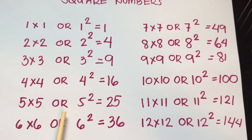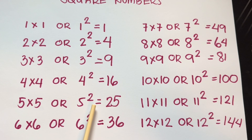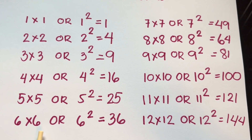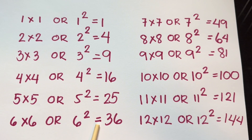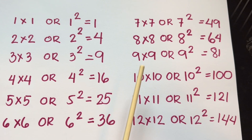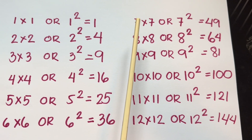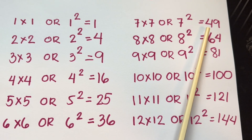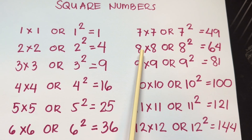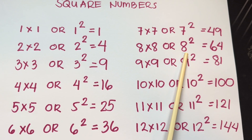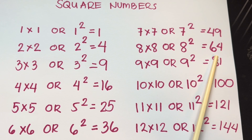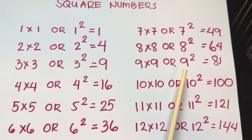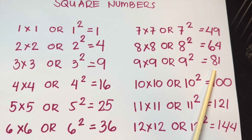5 times 5, or 5 squared, is equals to 25. 6 times 6, or 6 squared, is equals to 36. 7 times 7, or 7 squared, is equals to 49. 8 times 8, or 8 squared, is equals to 64. 9 times 9, or 9 squared, is equals to 81.